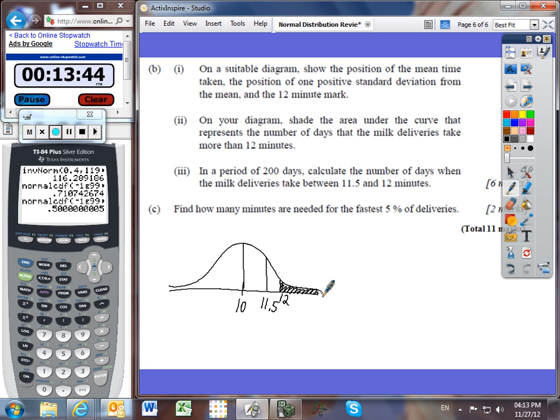In a period of 200 days, calculate the number of days when the milk deliveries take between 11.5 and 12 minutes. We're basically trying to find the probability that our value of x is between 11.5 and 12. First we need to find the probability, then multiply that probability by 200 days to find out how many of those 200 days were between 11.5 and 12.